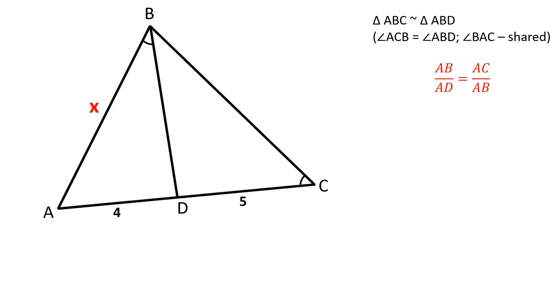In similar triangles, the corresponding sides are proportional. AB over AD is equal to AC over AB.